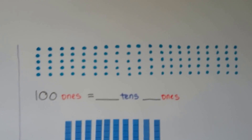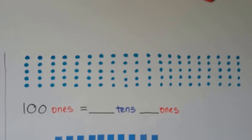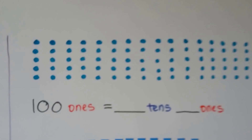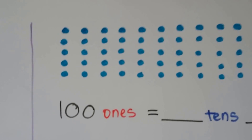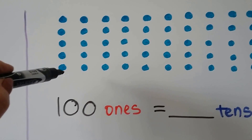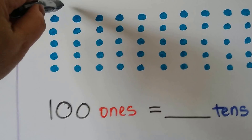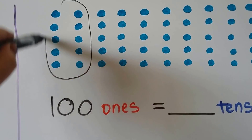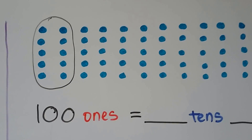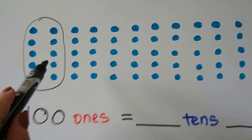Look at this one. We have one hundred ones — there's one hundred dots there. We can make groups of ten. We know one, two, three, four, five, six, seven, eight, nine, ten. We know two of these columns will make a ten, so we can circle two columns to make groups of ten. That's one.